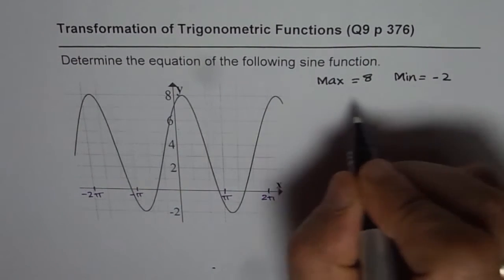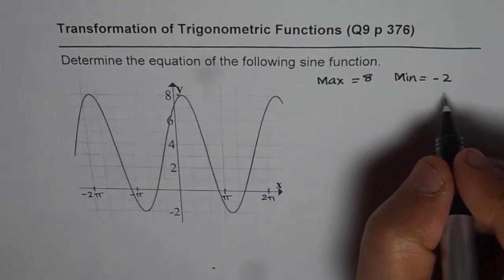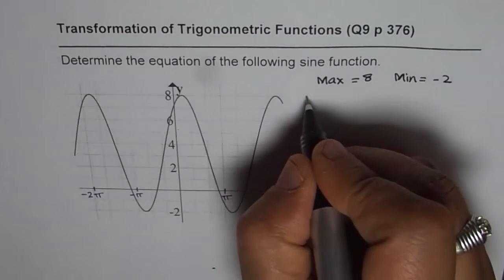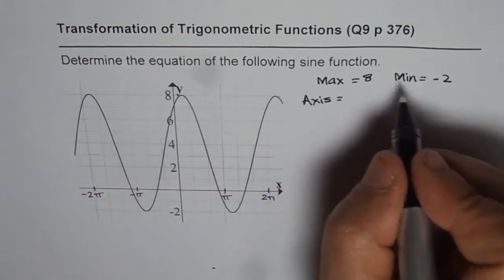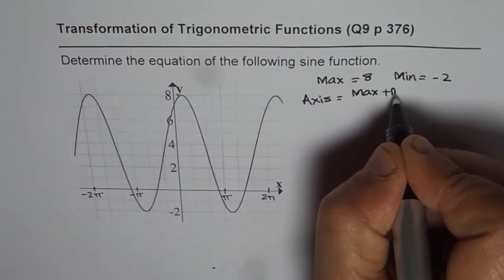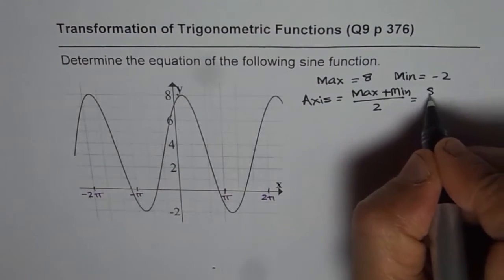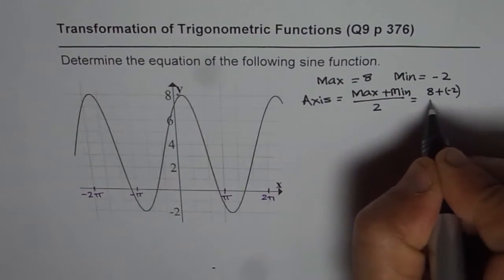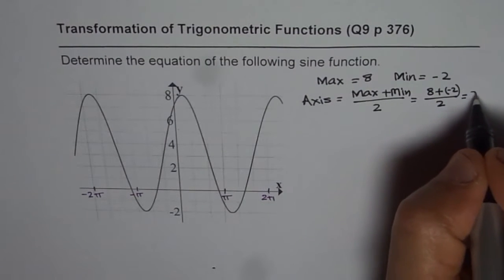Now from maximum and minimum value, we can get the axis and the amplitude. So let's find the axis first. Axis is the average of the two. That means you add them up and then divide by 2. So in this case, it will be 8 plus minus 2 divided by 2, which is 6 divided by 2 or 3.